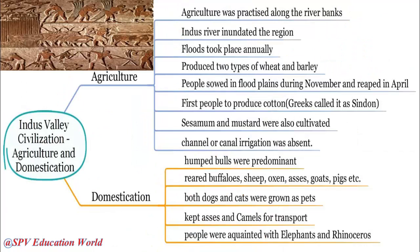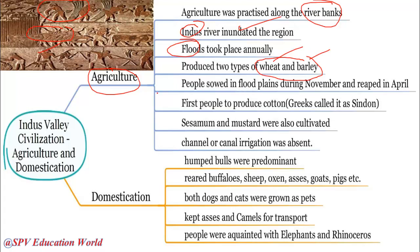Now we shall see Indus Valley Civilization agriculture and domestication. Agriculture was practiced along the river banks wherever they were located. The Indus River flooded this region frequently — similar to how the Ganga, Brahmaputra, Krishna, and Godavari flood annually today. The main crops cultivated were wheat and barley. They sowed in the flood plains during November and reaped during April, before the floods returned.